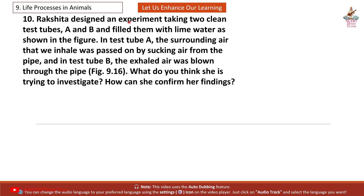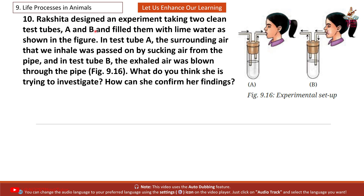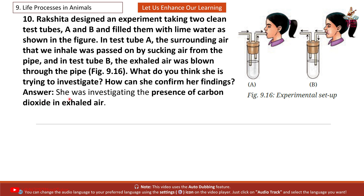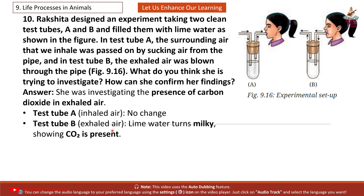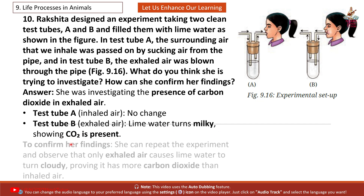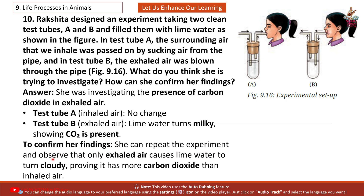Question 10: Rakshita designed an experiment with two test tubes A and B filled with lime water. In test tube A, the surrounding air we inhale was passed through the pipe. In test tube B, exhaled air was blown through the pipe. What is she trying to investigate? Answer: She was investigating the presence of carbon dioxide in exhaled air. Test tube A — inhaled air: no change. Test tube B — exhaled air: lime water turns milky, showing CO₂ is present. To confirm her findings, she can repeat the experiment and observe that only exhaled air causes lime water to turn cloudy, proving it has more carbon dioxide than inhaled air.